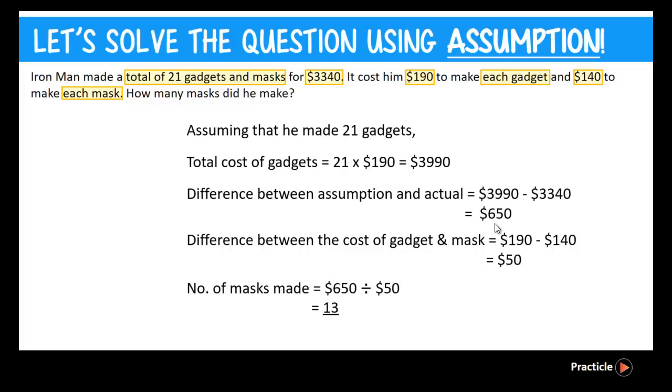So in order to find the number of masks made, all we need to do is to take the difference between our assumption and actual, which is $650, then divide it by the difference between the cost of one gadget and one mask. And this will give us a value of 13 masks. And this is our answer.